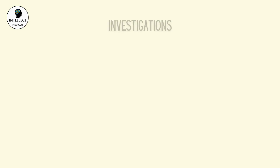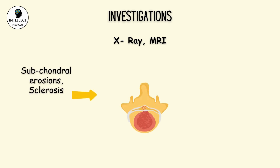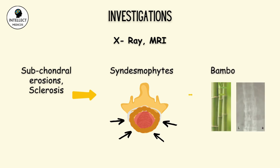For investigations, we can do X-ray and MRI. The early findings are subchondral erosions and sclerosis. After two to three years, or lesser duration in some cases, you can find syndesmophytes due to ossification of the annulus fibrosis of the intervertebral disc. Bamboo spine is a late finding.